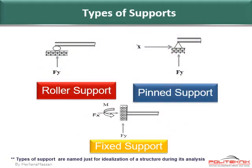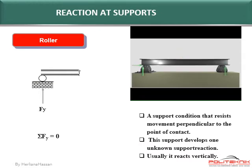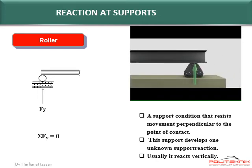Now, let's look at the types of support in building structure. In building structure, there are three types of support: roller support, pin support, and fixed support. The types of support are named just for idealization of a structure during its analysis. Roller support is a support condition that resists movement perpendicular to the point of contact. This support develops one unknown support reaction, and usually it reacts vertically.